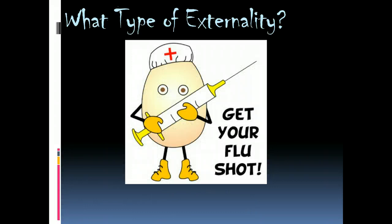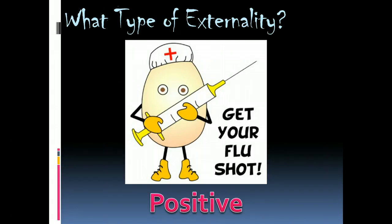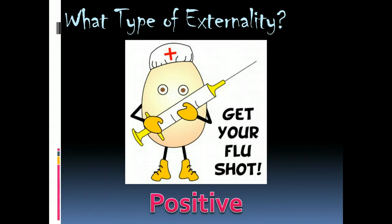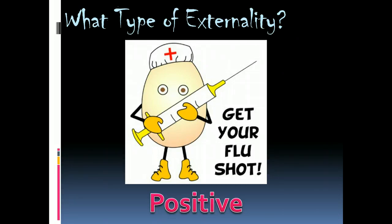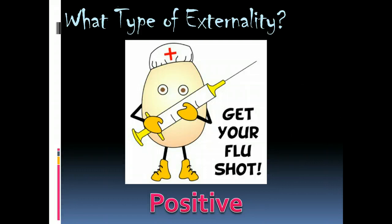The flu shot is an example where people getting the flu shot is actually a positive for society, because fewer people contracting the flu means a healthier and safer community. In all cases, if there is some sort of impact beyond the impact to the individual who made the decision, we have what are known as externalities.